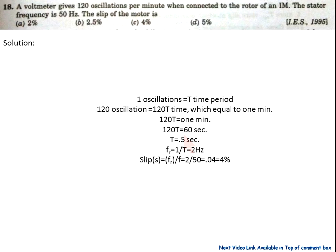Question 18: a voltmeter gives 120 oscillations per minute when connected to the rotor of an induction motor. The stator frequency is 50 Hz. Find the slip. One oscillation equals one time period T, so 120 oscillations = 120T = 1 minute. Therefore T = 0.5 seconds, and the rotor frequency fr = 1/T = 2 Hz. Slip = fr / f = 2 / 50 = 0.04, i.e., 4%. Option C is correct.